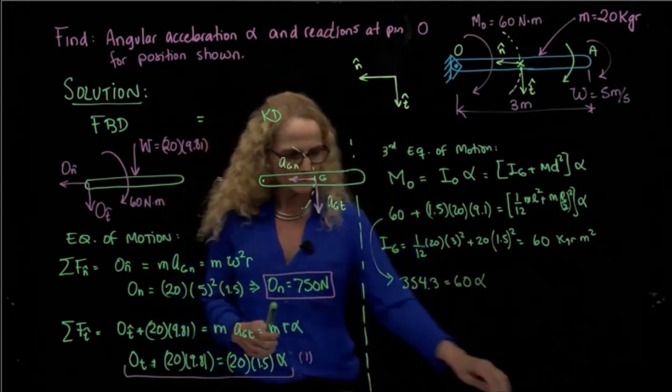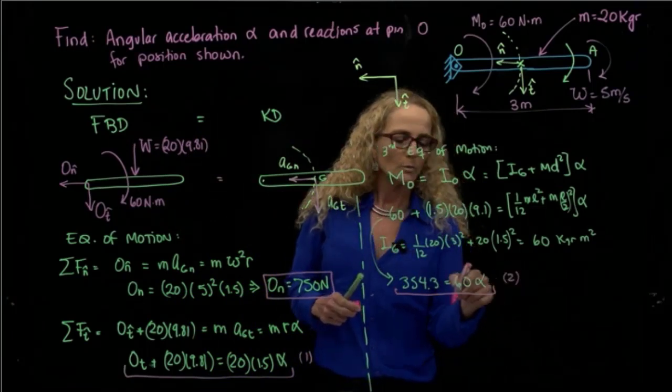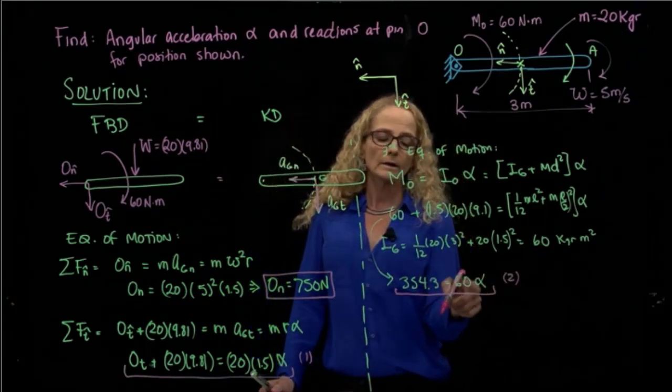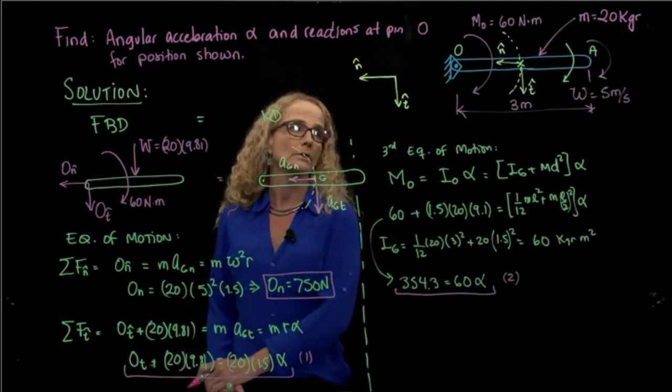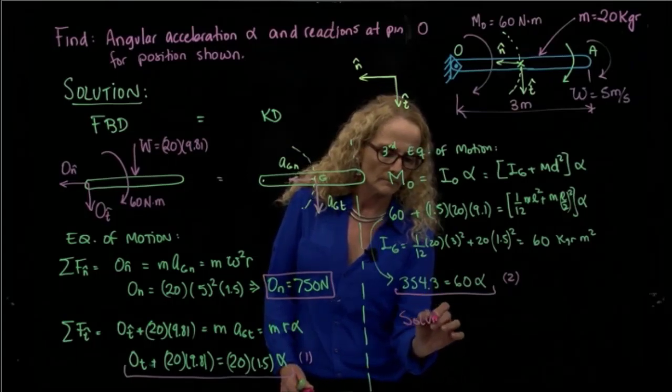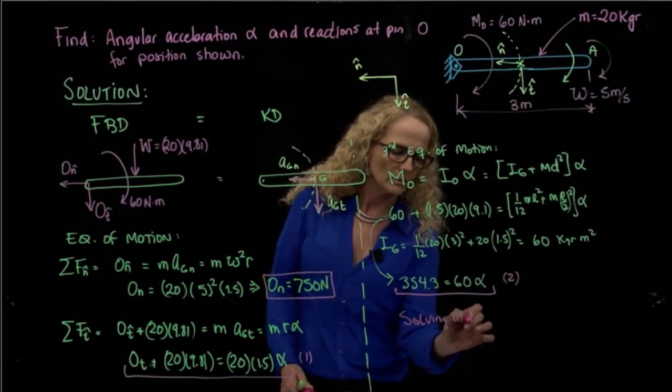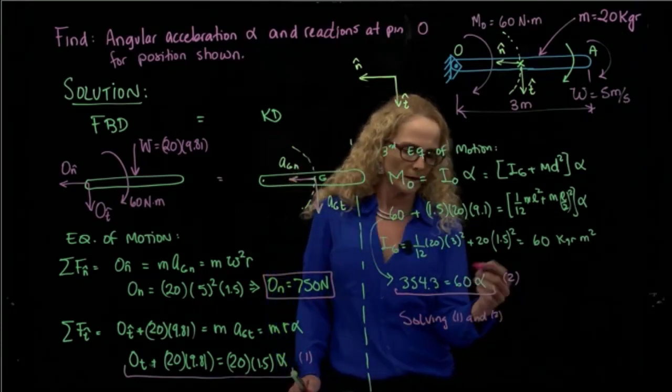So that's my second equation that I need to use. So with that equation, I calculate alpha, then I plug it in here and calculate the reaction in the tangent direction in point O. So solving 1 and 2, where actually 2 just give you the value of alpha, I will give you the answer.